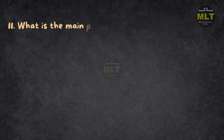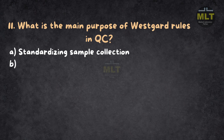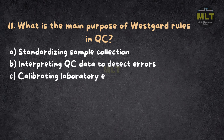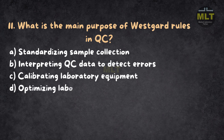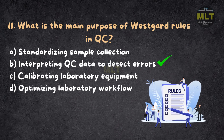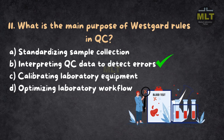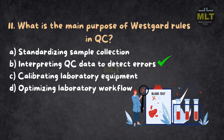Question 11: What is the main purpose of Westguard rules in QC? a. Standardizing sample collection. b. Interpreting QC data to detect errors. c. Calibrating laboratory equipment. d. Optimizing laboratory workflow. Correct answer: b. Interpreting QC data to detect errors. Westguard rules provide statistical criteria for detecting QC issues like trends, shifts, or random errors. These rules help decide whether to accept or reject test runs. Sample collection and workflow optimization are unrelated to Westguard rules.